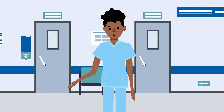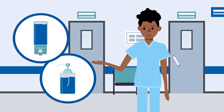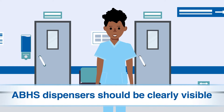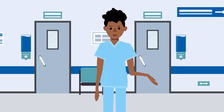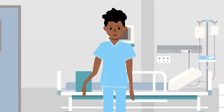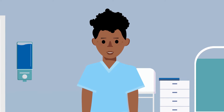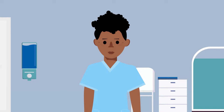Begin by making sure that healthcare personnel have everything they need to clean their hands within reach while they work. Alcohol-based hand sanitizer dispensers should be clearly visible, with at least two for each patient room — one in the hallway for use when entering and exiting a room, and one inside the room for use during patient or resident care. In common areas, or areas housing multiple patients or residents, consider having one dispenser for every two beds.